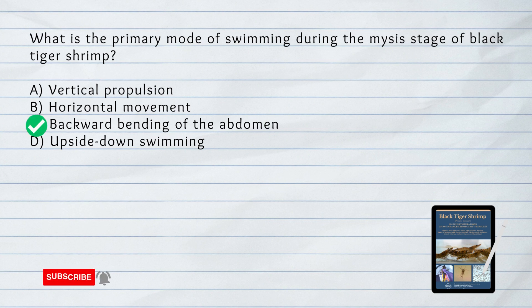C. Backward bending of the abdomen. Swimming during the MISY stage is characterized by thoracic propulsion, or by bending the abdomen backwards.